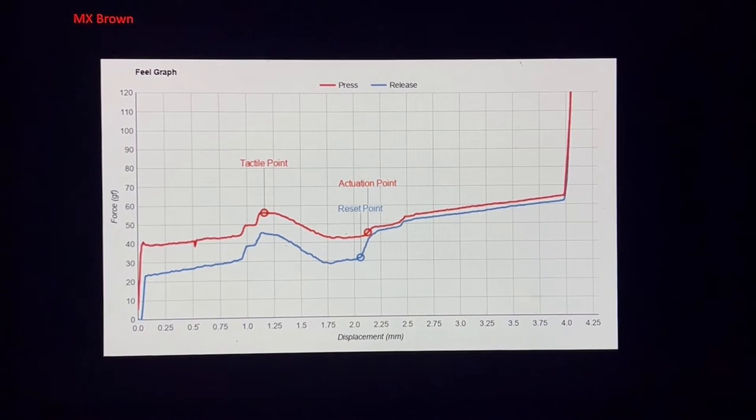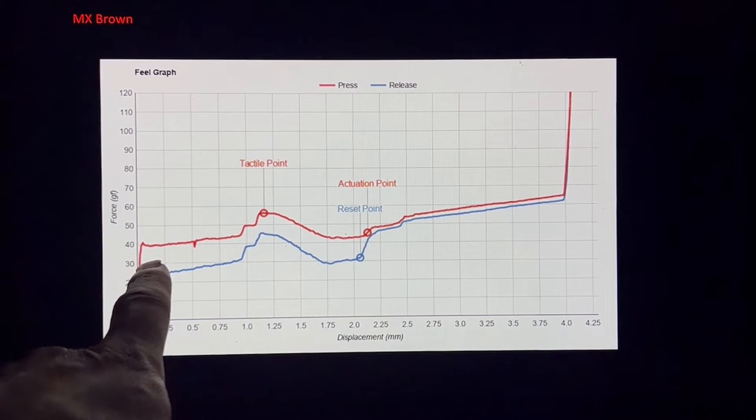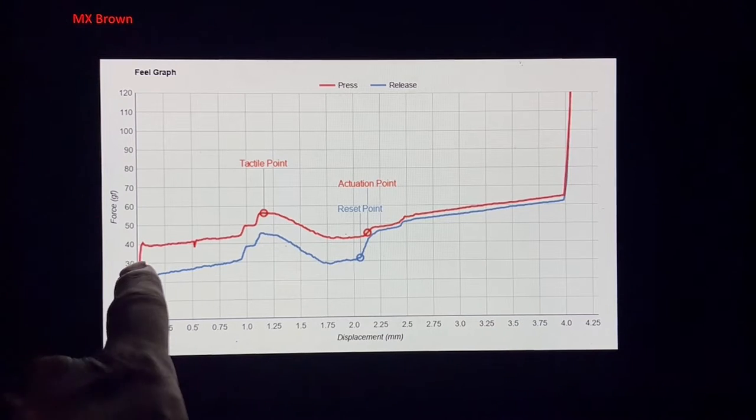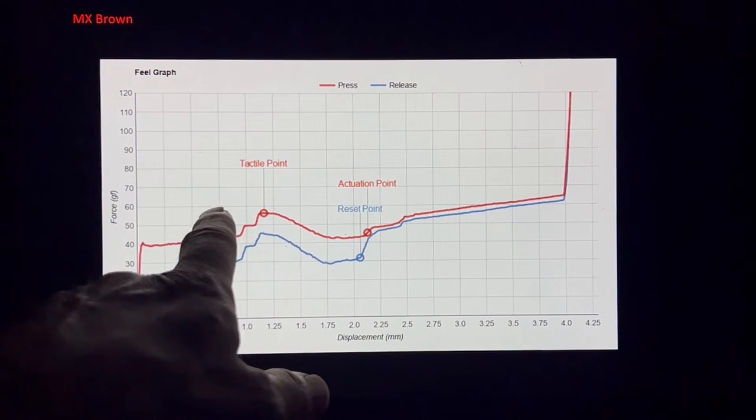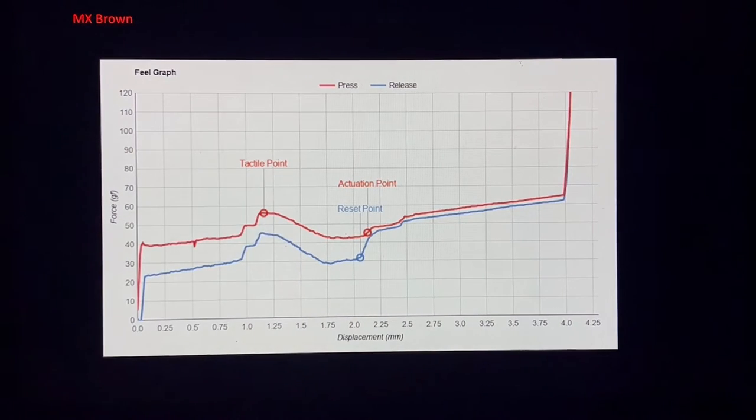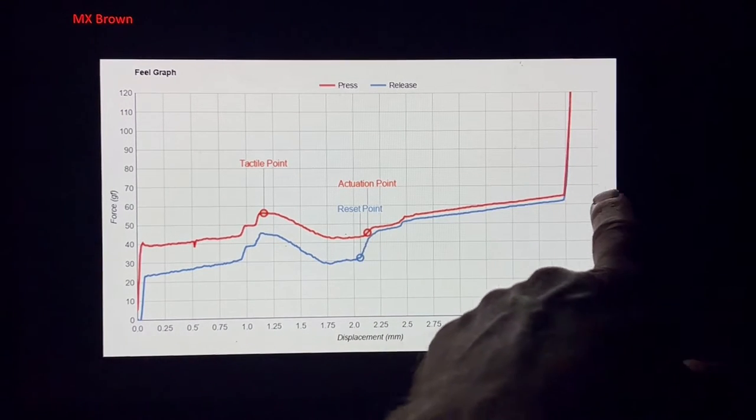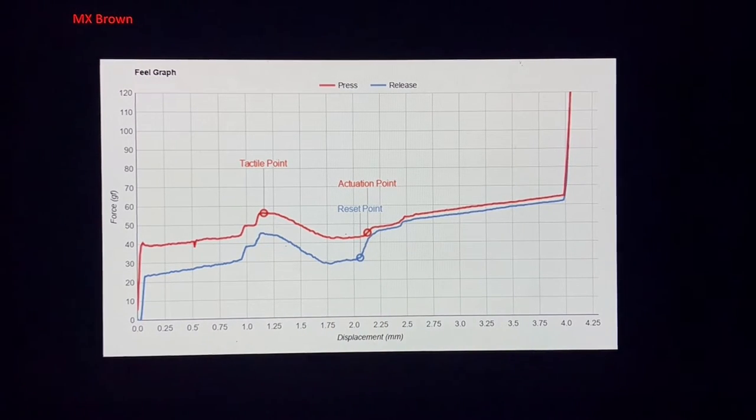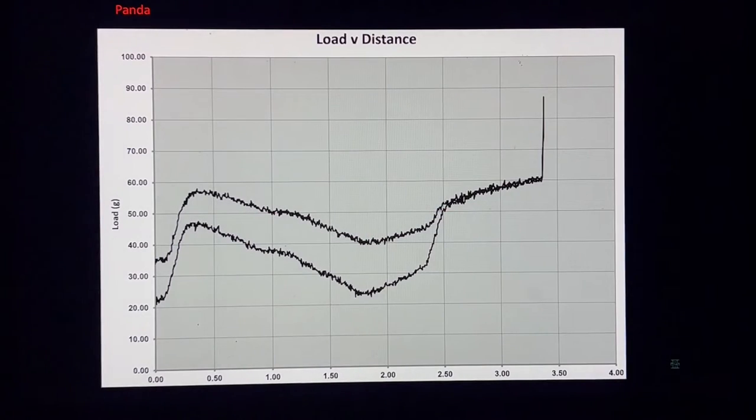Next we have the MX Browns. So that's where the force starts at 40 grams, similar to centi-newtons. And then it steps up linearly almost. Then you have a little step, then you reach the tactile point, which is at 55, almost 60 grams force. Drops down again, there's the actuation, and then increases in force as you move along the back. And then there's the reset point coming back the other direction. So each switch is going to have a little different feel to it.